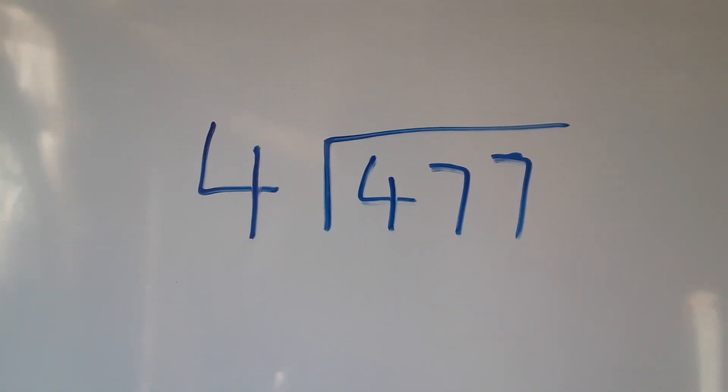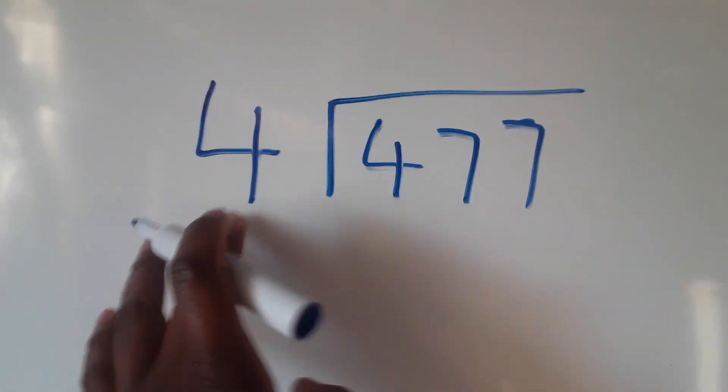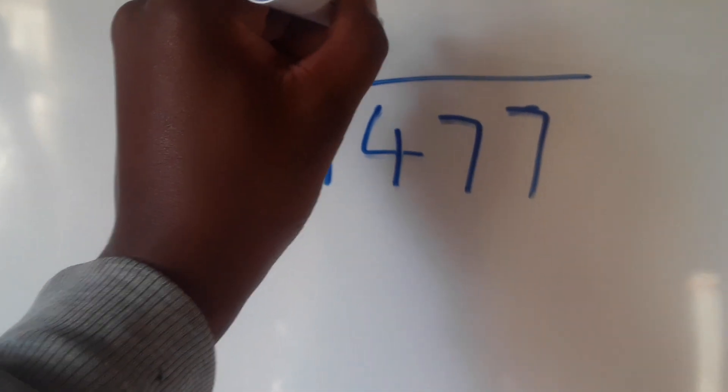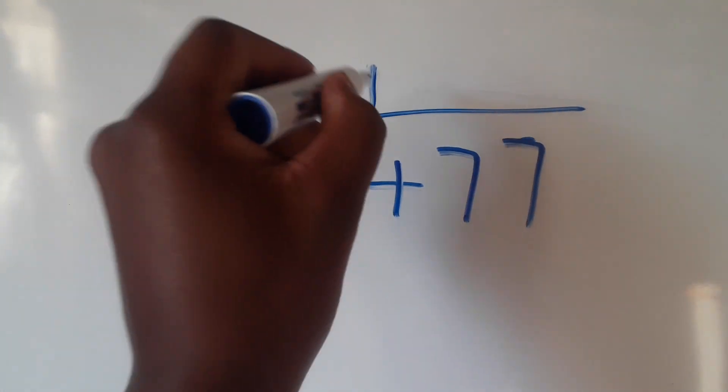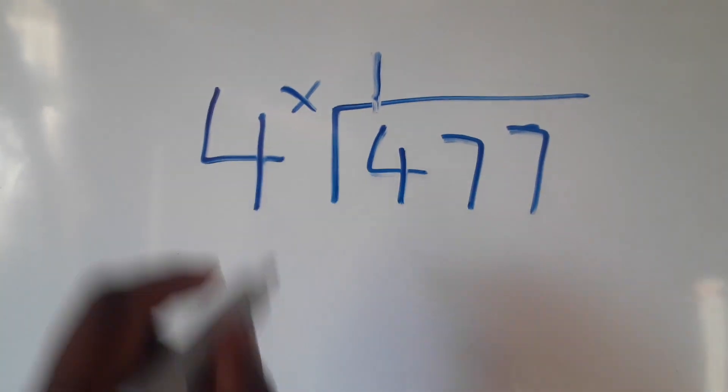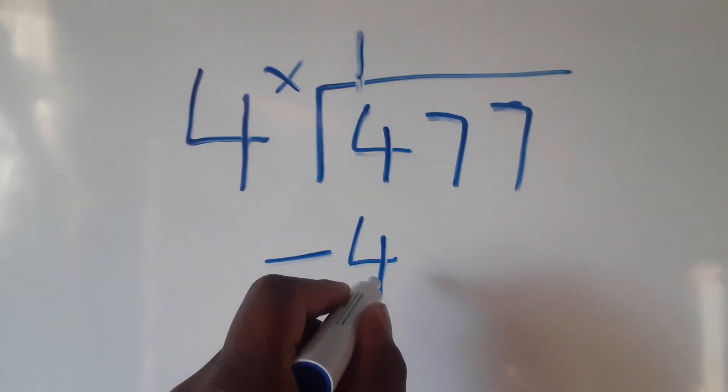We normally do this in grade four. How many times does 4 go into 4? It's 1, we put that 1 on top. Then we say 1 times 4, we get 4. Then we say 4 minus 4, we get zero.